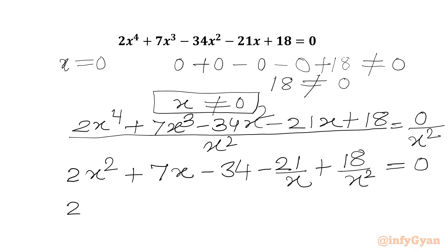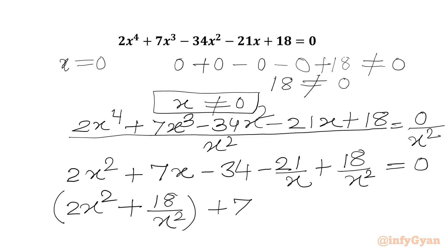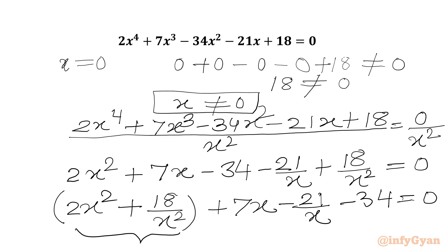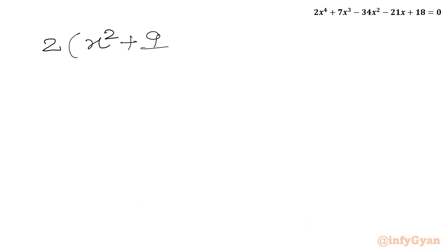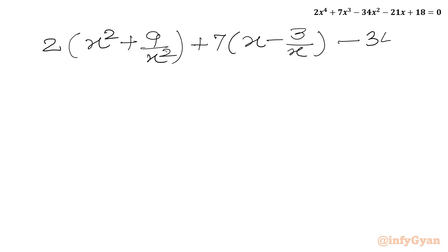Now we will rearrange and write our terms in the LHS equal to 0. From the first and last terms I can take 2 common, and from the middle terms I can take 7 common. We write: 2(x² + 9/x²) + 7(x - 3/x) - 34 = 0.